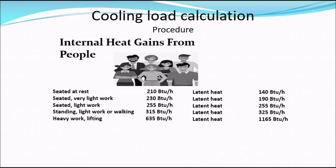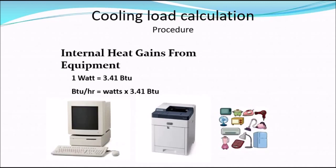The next thing to consider is internal heat gains from equipment and appliances such as computers, printers, irons, ovens, and everything that can generate heat within the building. Basically, one watt is equal to 3.41 BTU/hr, and BTU per hour equals watts multiplied by 3.41. There are many types of appliances and equipment in restaurants, schools, office buildings, and hospitals that may generate significant heat to be accounted for in the cooling load.